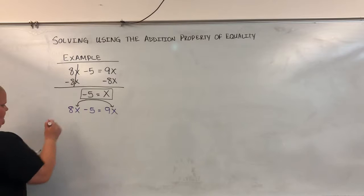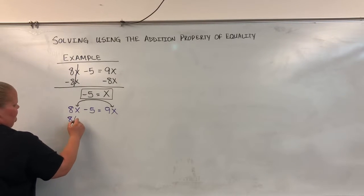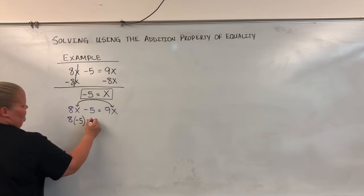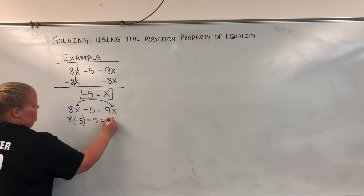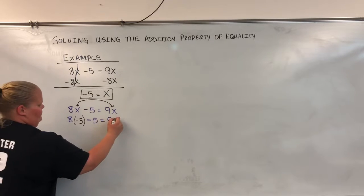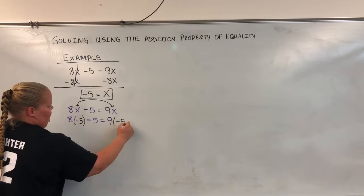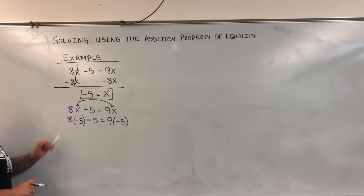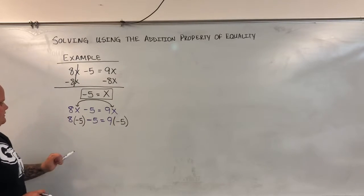So I have 8 times negative 5 minus 5 equals 9 times negative 5. So I plug the negative 5's in for the x's.